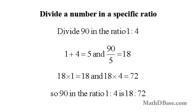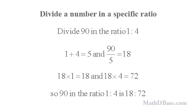Basically, we're dividing 90 by 5, the sum of the terms, to get 5 groups of size 18, so that 1 fifth of 90 is 18 and 4 fifths of 90 is 72. Notice that 18 plus 72 equals 90.